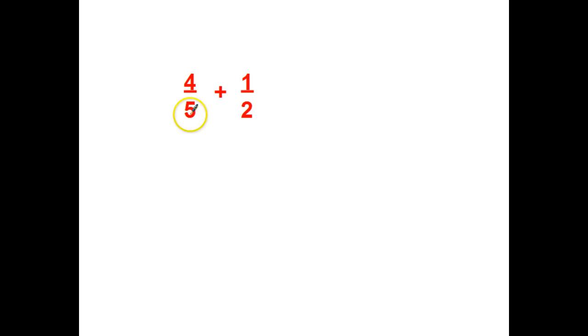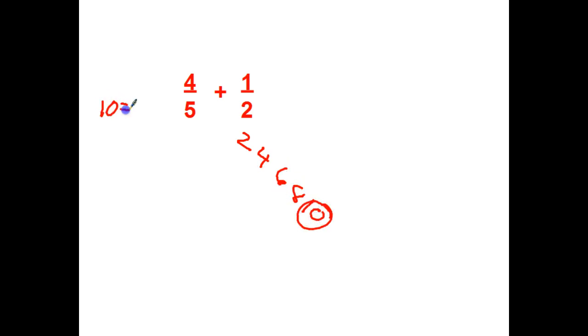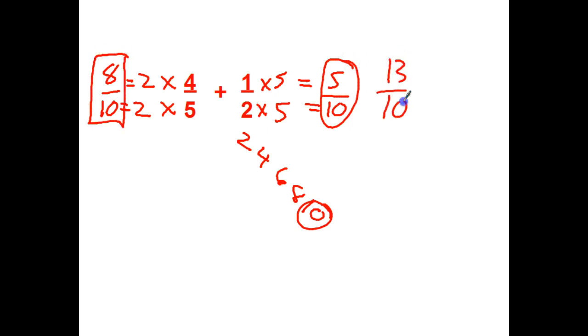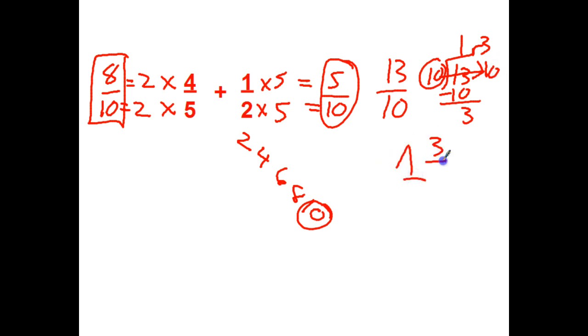We've got time for about one more — stop the video and you try it out. 4 fifths plus 1 half. I know multiples of 5 end with 5s or 0s, and multiples of 2 are even numbers. So: 2, 4, 6, 8, 10 — there's my LCM. Changing them both to a denominator of 10. Then 5 times 2, so 4 times 2 equals 8. 2 times 5, so 1 times 5 equals 5. 5 tenths plus 8 tenths equals 13 tenths. Go ahead and divide it out — it goes one time, remainder 3. So my answer is going to be 1 and 3 tenths.